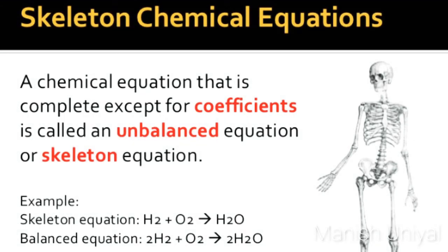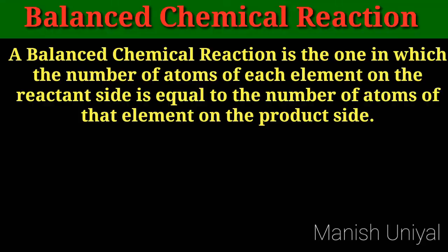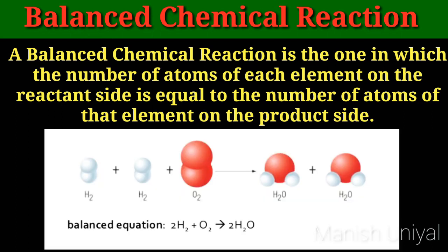Skeletal chemical equation. A chemical equation that is complete except for the coefficients is called an unbalanced equation or skeletal equation. For example, the skeletal equation is: H₂ + O₂ → H₂O, whereas the balanced equation is: 2H₂ + O₂ → 2H₂O. A balanced chemical reaction is one in which the number of atoms of each element on the reactant side is equal to the number of atoms of that element on the product side. We can see the number of atoms in the reactant is equal to the number of atoms in the product side.